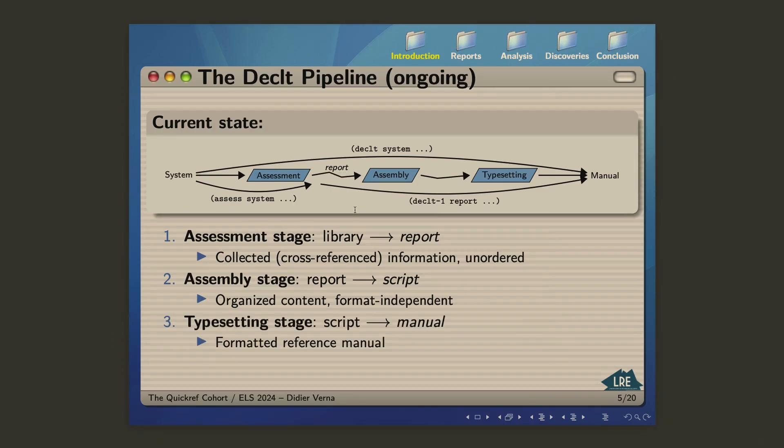And finally, the third stage is called the typesetting stage. And at that stage, you take the organized internal representation of the reference manual and then you generate the final human-readable documentation. As of today, which is a 4.0 beta one, only the first stage of the pipeline is complete. So decklet has a function which is called assess which creates the report. And the rest, because it's not done yet, is currently wrapped in a function just called decklet-1 for the lack of a more creative terminology. So right now I have the first stage of the pipeline complete, but not the rest.